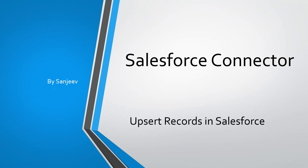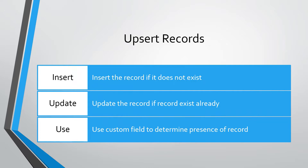Hi everyone, my name is Sanjeev. In this video I'm going to demo how to upsert records in Salesforce using the Salesforce connector. The upsert method updates the record if it already exists in Salesforce. If the record does not exist in Salesforce, the upsert method creates a new record. To determine if a record is present in Salesforce or not, we need to specify an external ID custom field in the upsert method of the Salesforce connector.